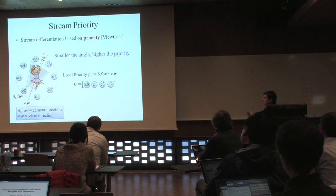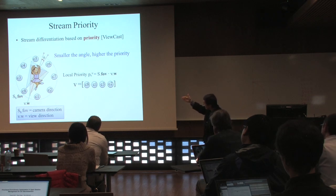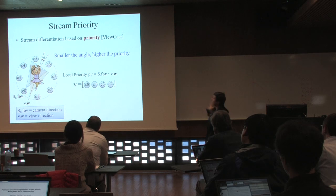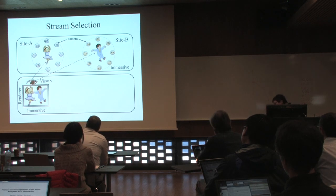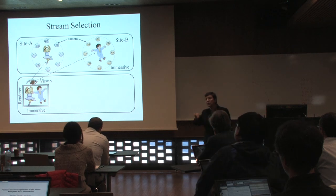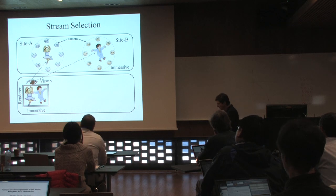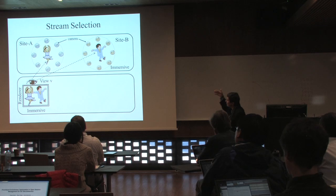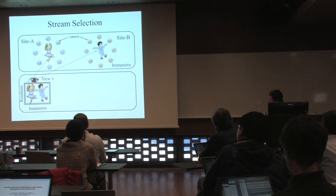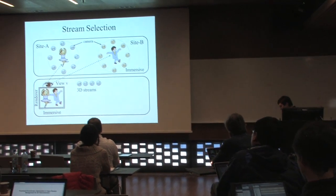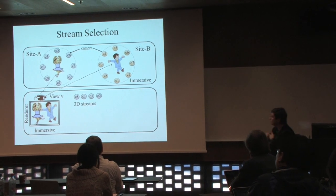If we order all cameras with respect to the viewer's desire, cameras C8 and C1 are the highest priority streams, while C3 and C2 are lower priority. Cameras like C6 or C5, far from the viewer's desired direction, have much lower priority. Additionally, because this is an interactive multi-stream environment with different sites, we also need to prioritize and select which streams are important from multiple sites.